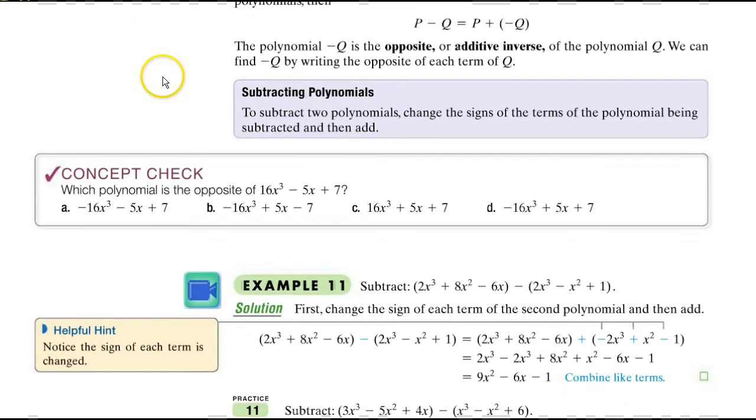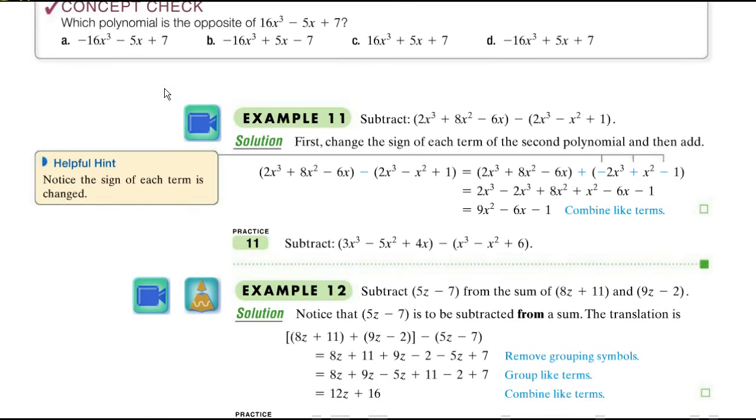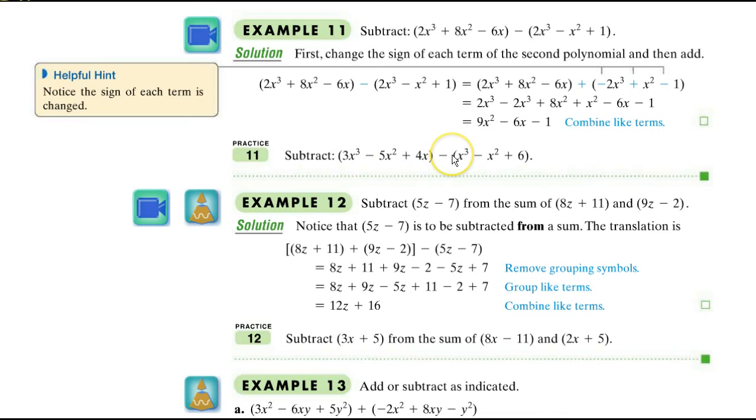When we do subtraction, this is where it gets a little bit more challenging. Because we have to do something first. And they've described it above. We've said this before. When you have a parenthesis and there's a negative sign in front of the parenthesis, to remove the parenthesis, all you have to do is change each term from its original sign to its opposite sign. And then it just becomes a plus. So the negative out here becomes a plus. And then internally, you change each sign. That's what they're showing you. And now it's just like the previous one. Combine like terms.